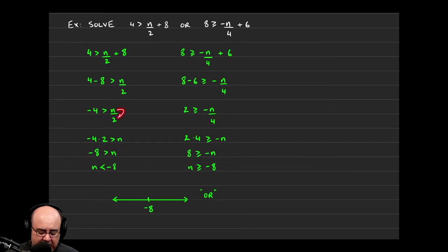Then, because the n is being divided by the 2, I need to move the 2 over to the other side. I do that by multiplying the 2 over. So negative 4 times 2 is negative 8. So I get negative 8 is greater than n.